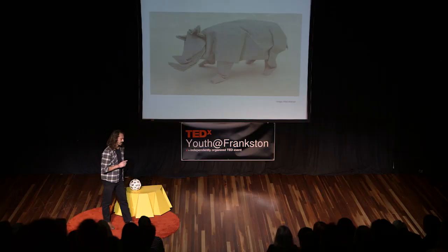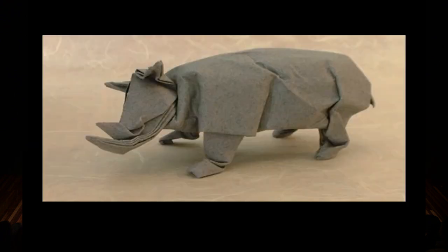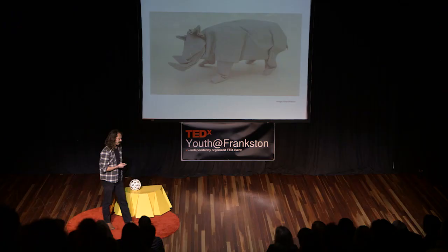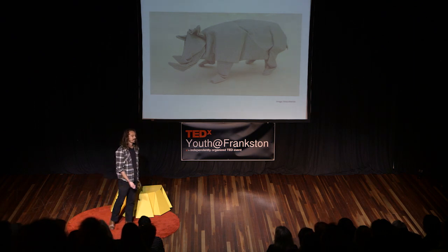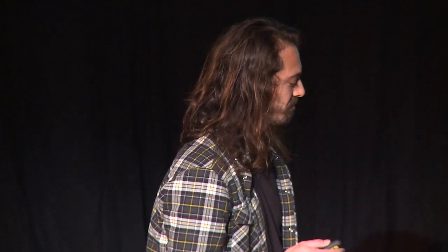And the most complex thing in this book was this rhinoceros. And I was disappointed. No planes. Everything was made from squares. But still, this gave me something to work towards. It took five years, but I learned how to make this thing.